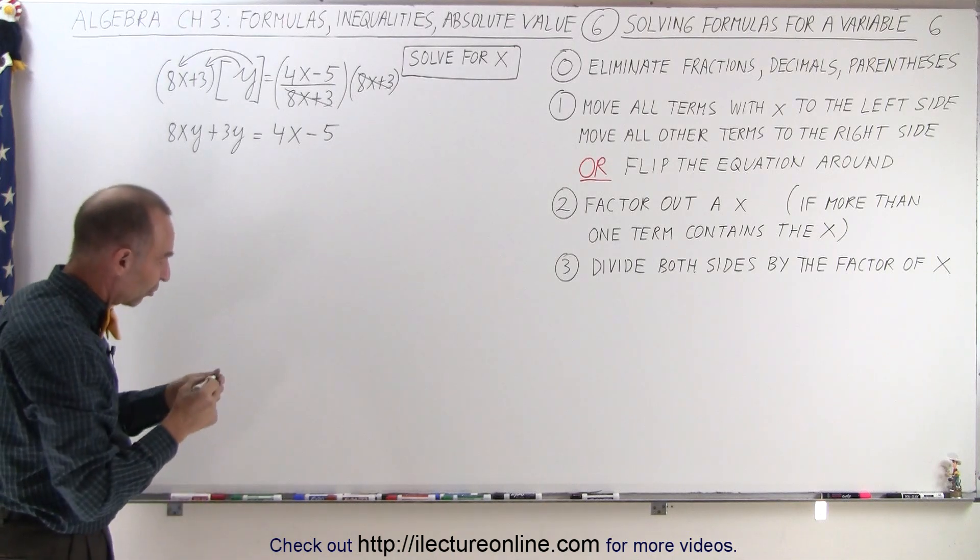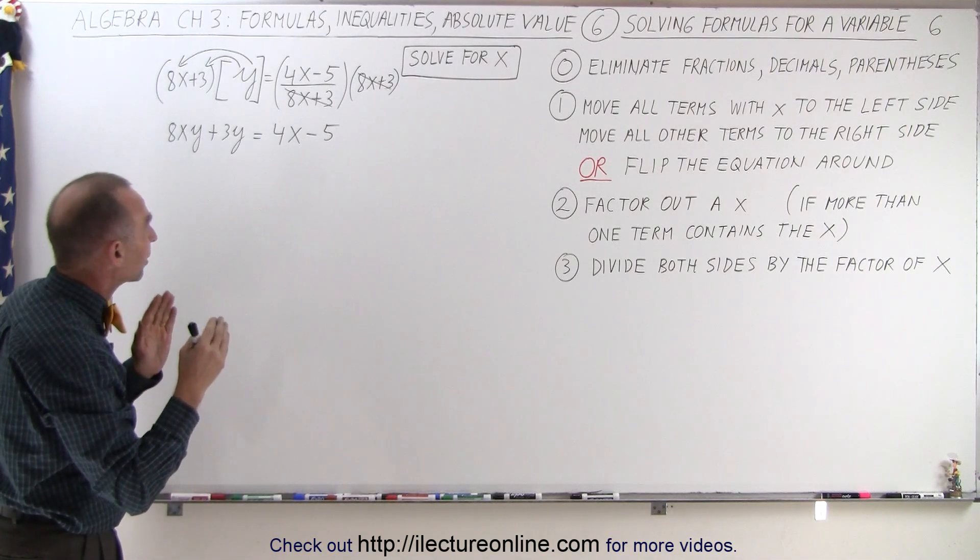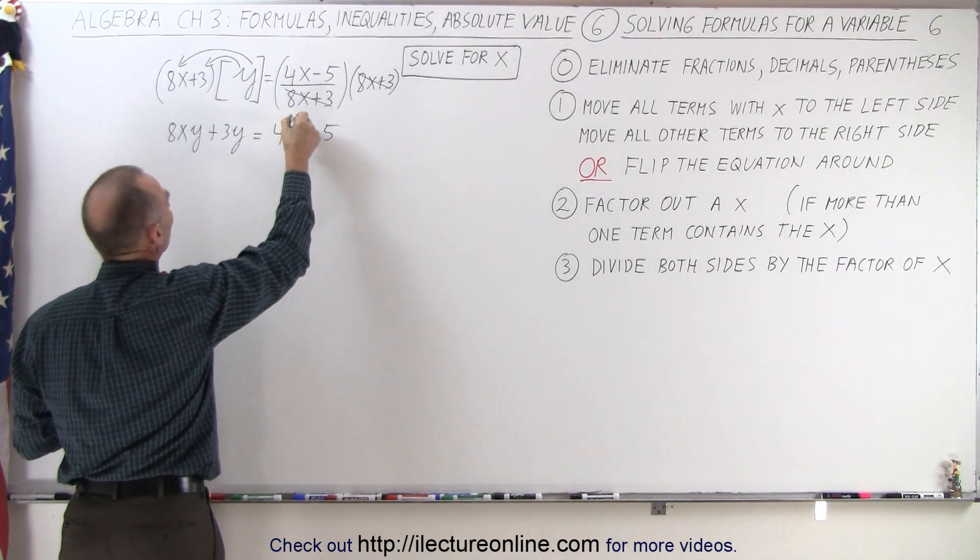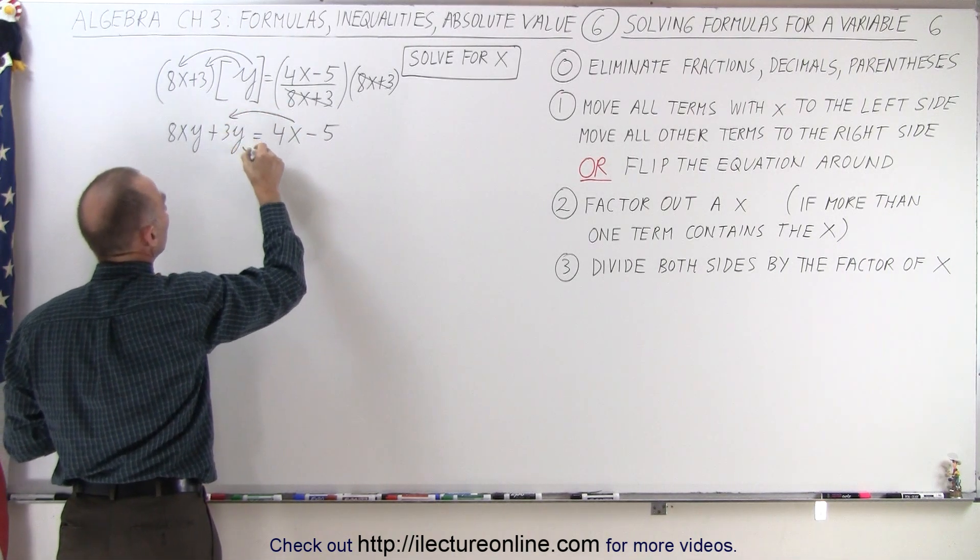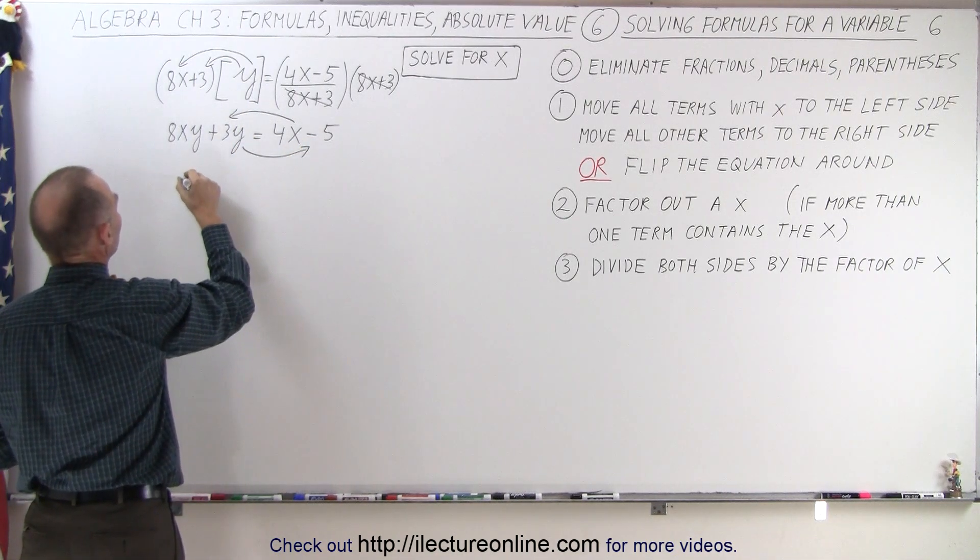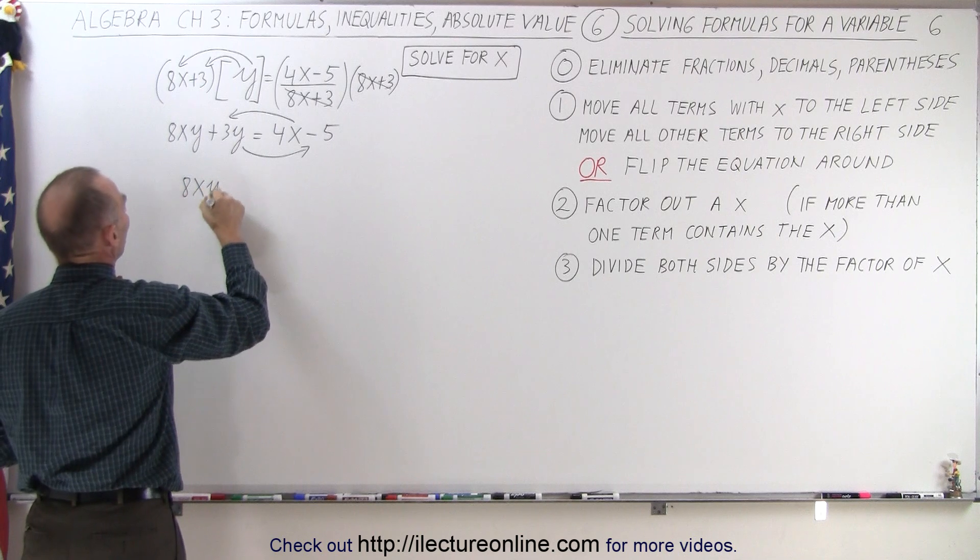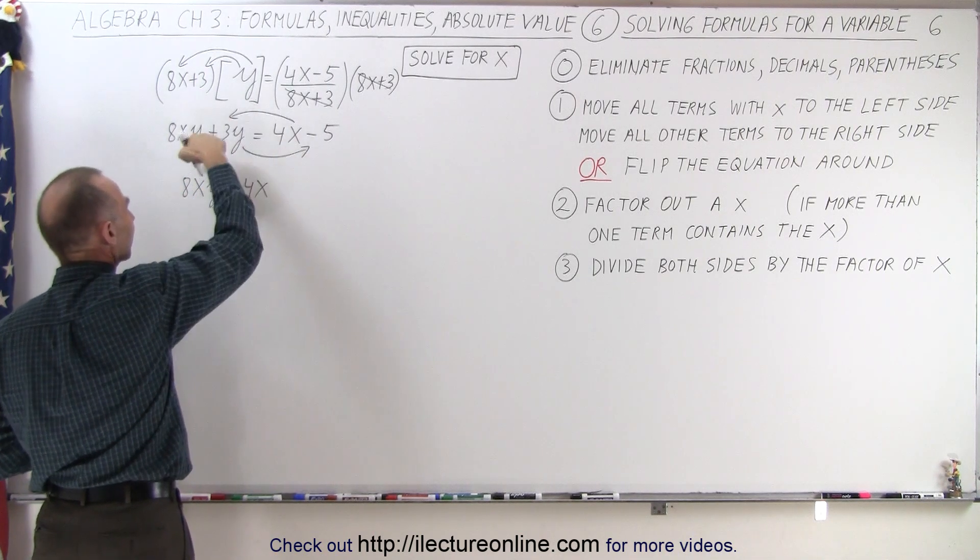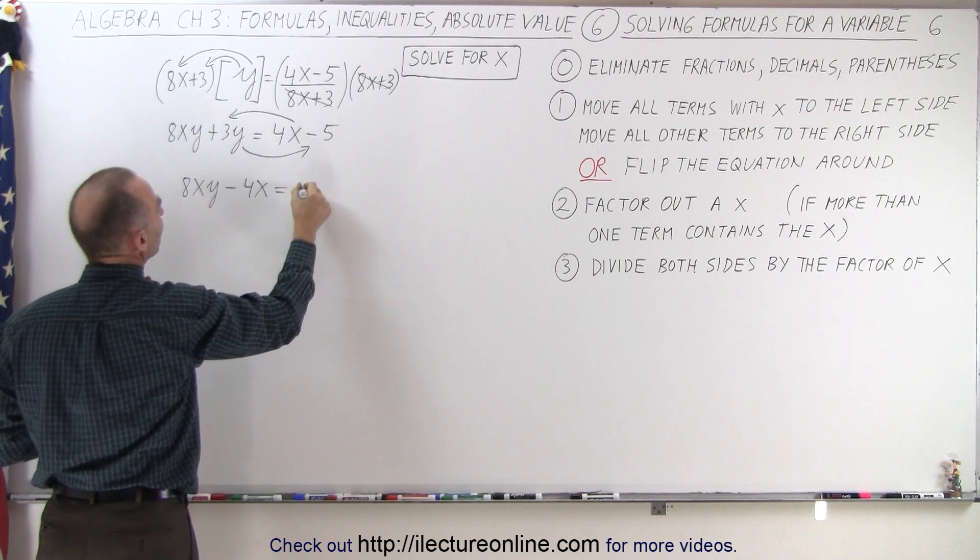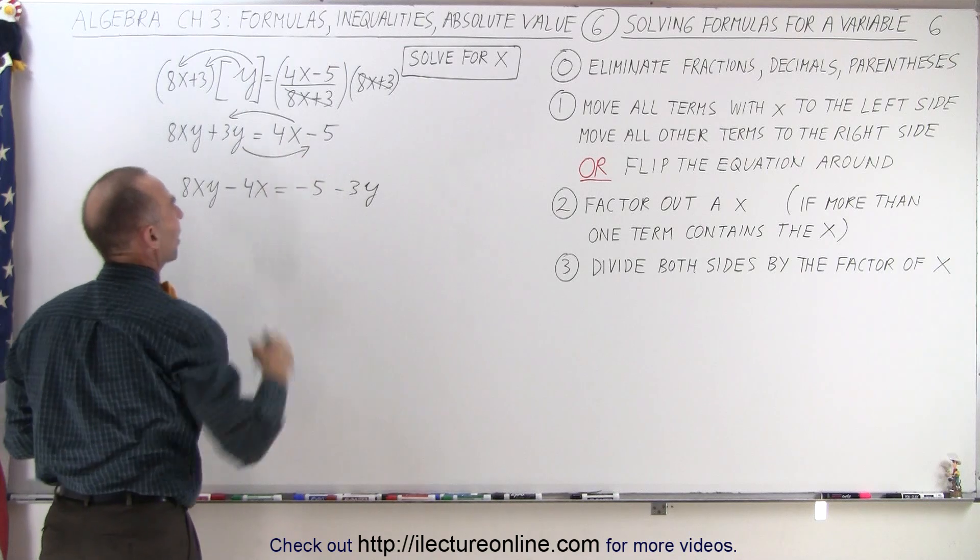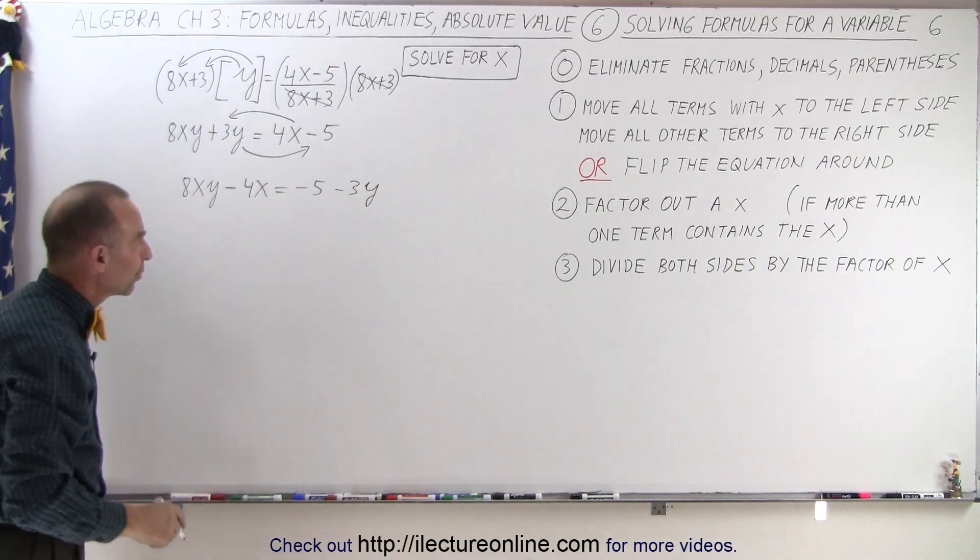On the next step we're supposed to move all the terms that contain the x to the left side and everything else to the right side, which means we're going to take 4x and move it to the left and the 3y and move that to the right, which means we end up with 8x times y minus 4x, because when I move the plus 4x to the left side it becomes minus, equals minus 5 minus 3y. When I move the 3y to the right, the sign changes, it becomes the negative 3y.